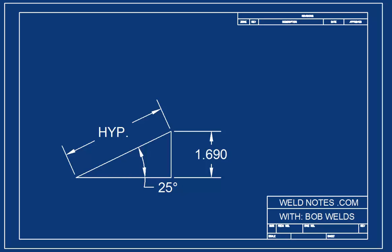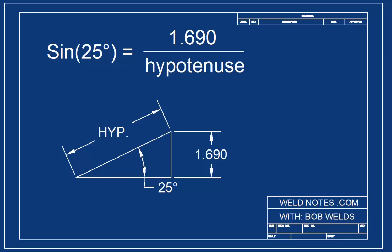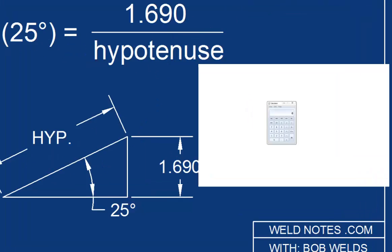First, write down what we know. The sine of 25 degrees is equal to the opposite side, 1.69, over the hypotenuse. Now we need the sine of 25 degrees. This time, I'll use my calculator instead of Google.